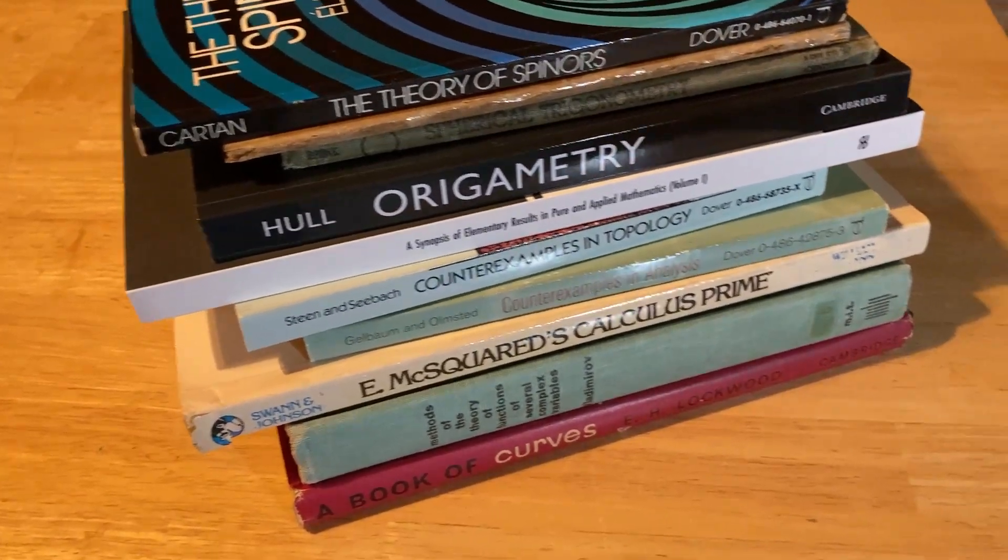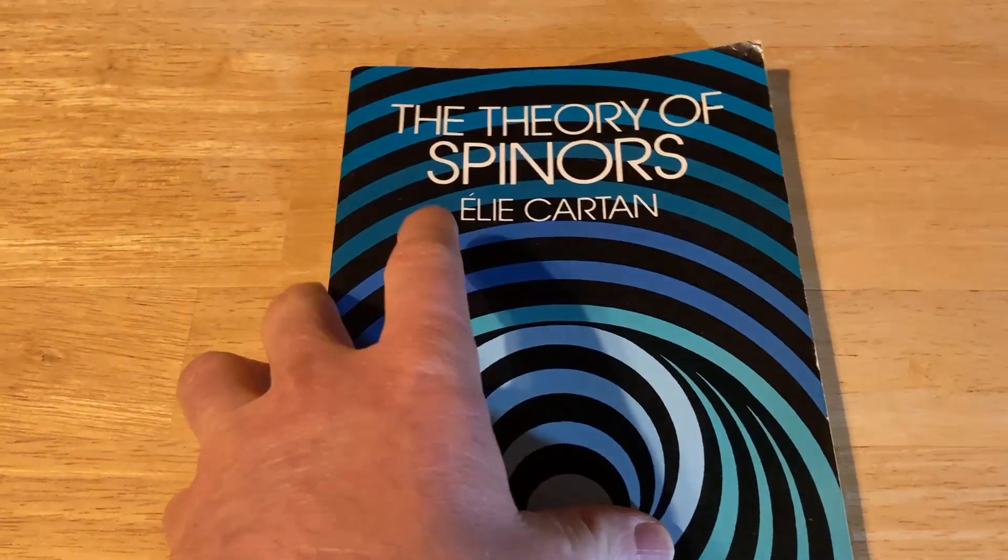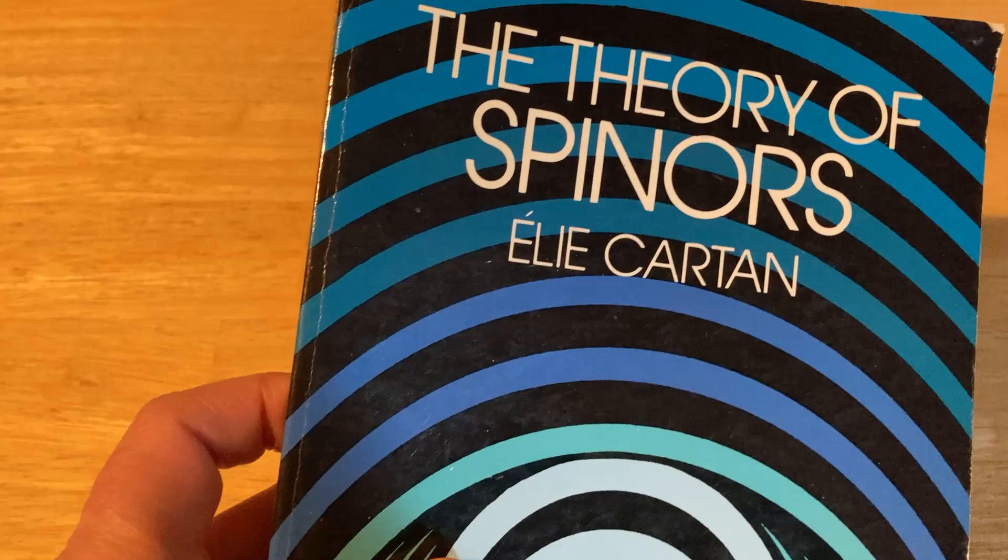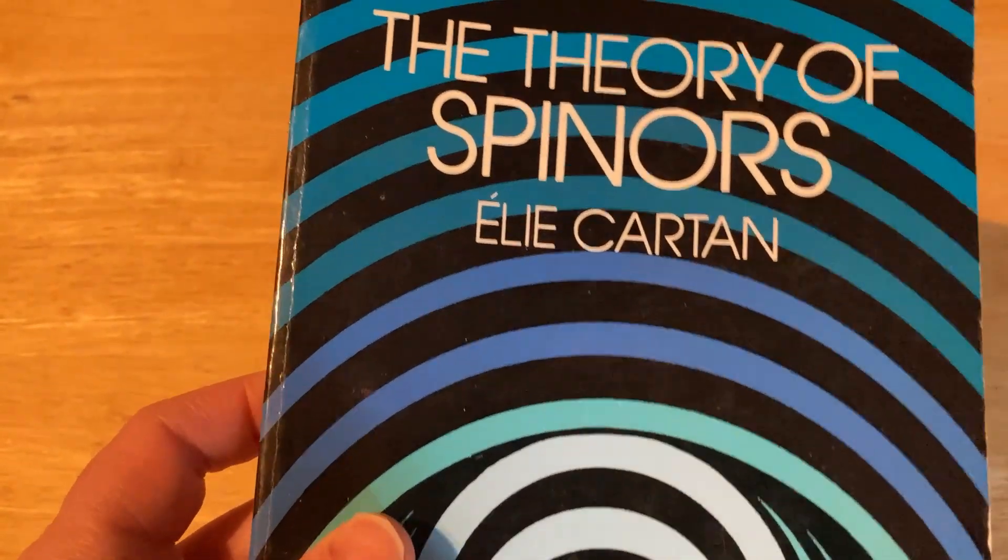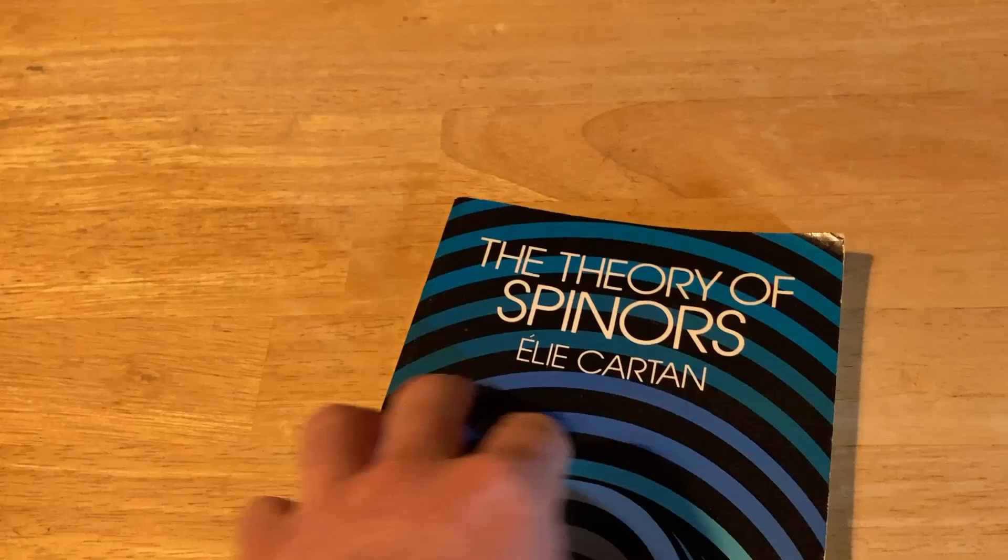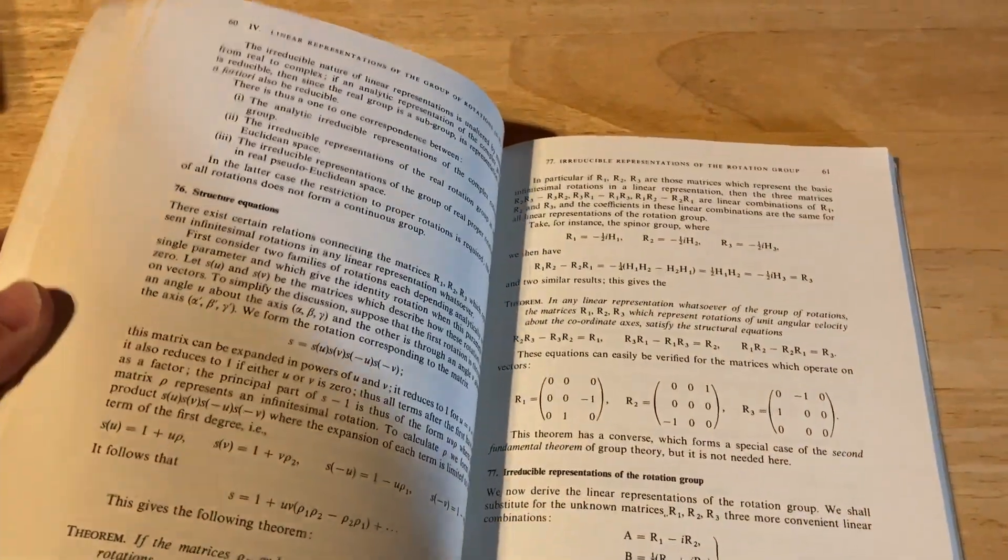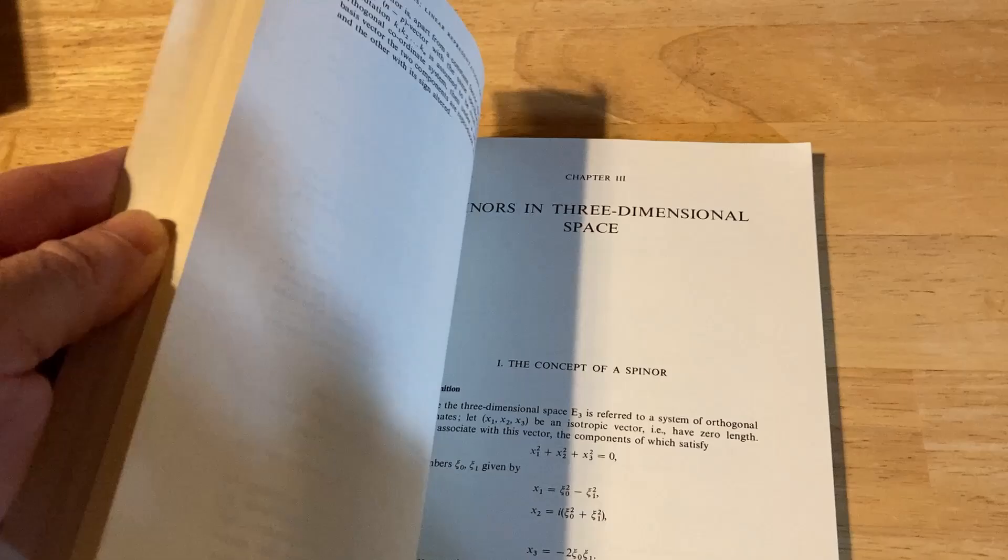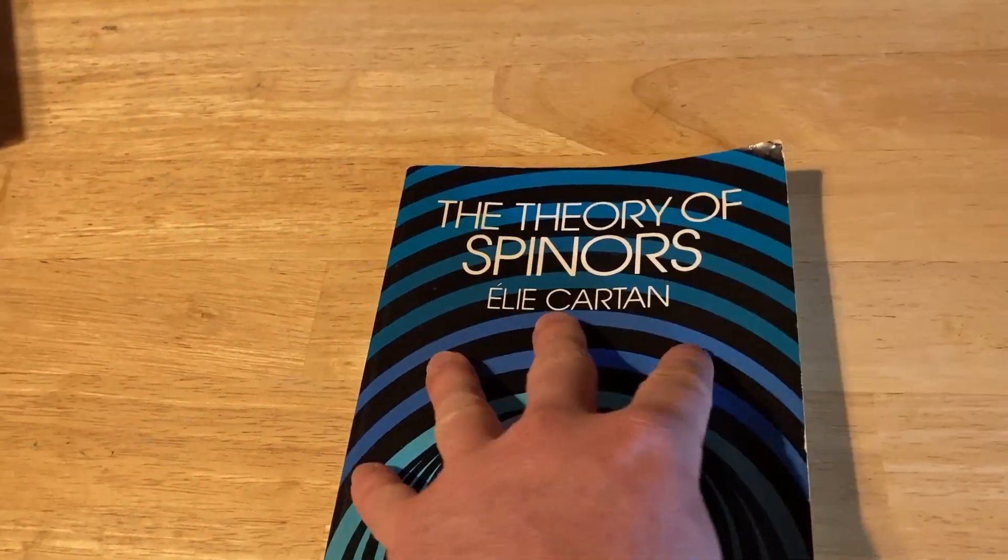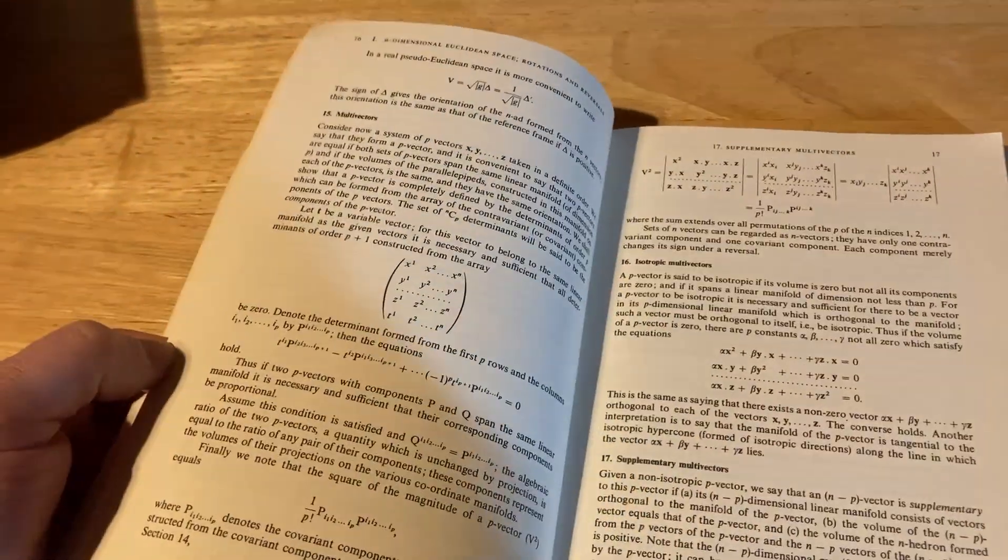Let's go ahead and look at the first one. This is called The Theory of Spinores, and it was written by Elie Cartan. Spinores were first used by physicists in the field of quantum mechanics. Elie Cartan did a lot of work with Spinores, and he discovered Spinores in their most general sense.